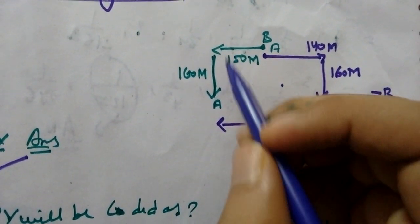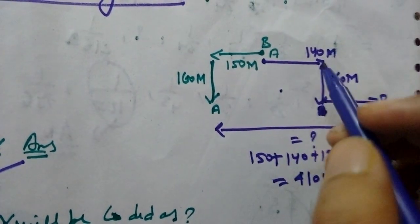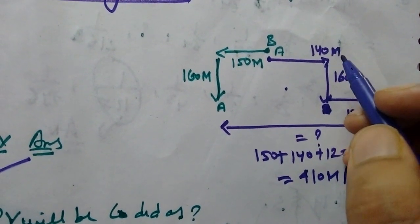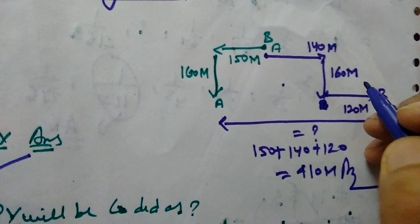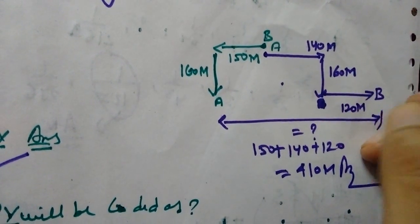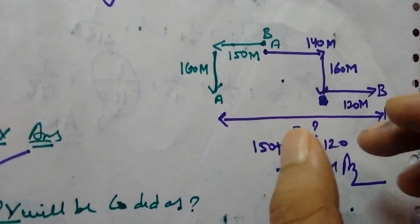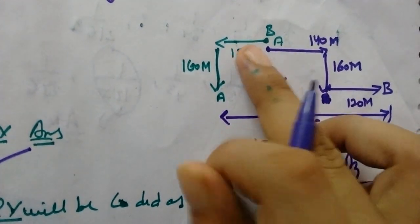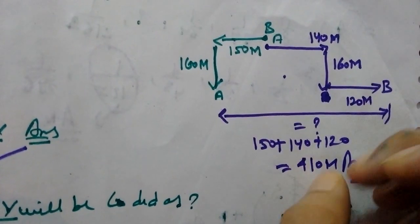A 150 meter west then south 160 meter. Then B east 140 meter then south 160 meter then left 120 meter. Then now B from A, 150, 140 and 120 that will give you 410 meter.